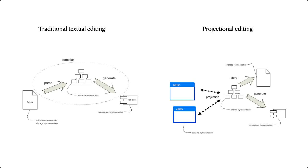To understand projectional editing, we first need to briefly look at what traditional textual editing is. In traditional textual editing, which most of you are familiar with, you write your program as a text file — you give it an extension like .c, .java, .cs. It is parsed; the compiler parses it into an abstract representation, mostly an abstract syntax tree. It's essentially an intermediate representation that the compiler can understand, perform analysis on, perform optimizations on, and then using the abstract representation, it generates executable code that is directly executed.